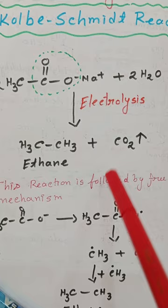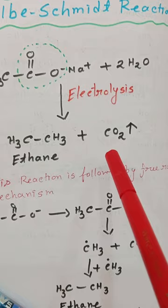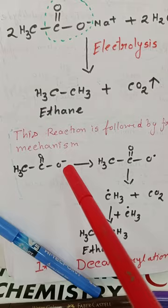Here we take sodium acetate and it undergoes electrolysis to produce ethane molecules. This reaction follows a free radical mechanism.